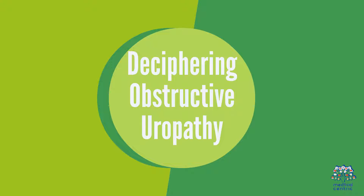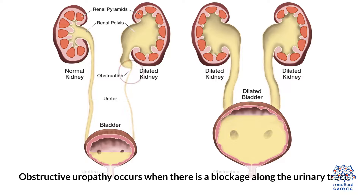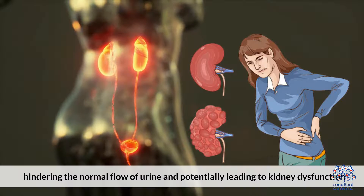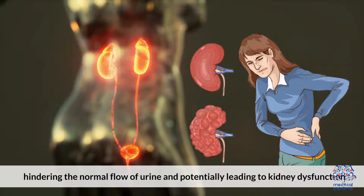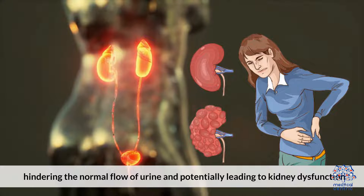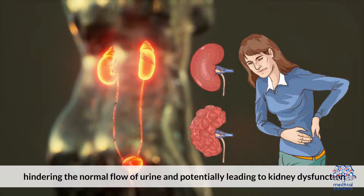Deciphering Obstructive Uropathy: Obstructive uropathy occurs when there is a blockage along the urinary tract, hindering the normal flow of urine and potentially leading to kidney dysfunction.